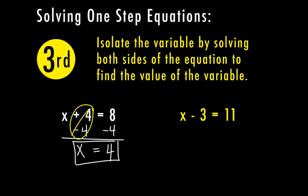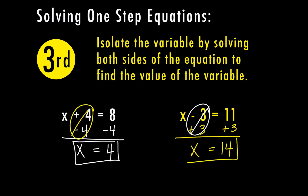For the other example, we had x minus 3, and we decided to add 3 to do the opposite. Negative 3 plus 3 equals 0, and 0 plus x equals x — so I've isolated my variable on the left. On the right side, 11 plus 3 is 14. So for our second example, x equals 14.